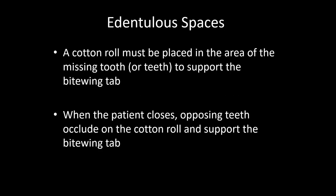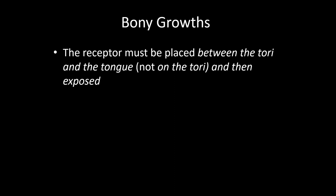Modifications in bitwing technique: if the patient has an edentulous space, a cotton roll must be placed in the area of the missing tooth or teeth to support the bitwing tab, so the opposing teeth occlude on the cotton roll and support the tab. If there is a bone growth such as tori, the receptor must be placed between the tori and the tongue — not on the tori — as it may change the inclination or angulation of the film. This concludes the bitwing technique.